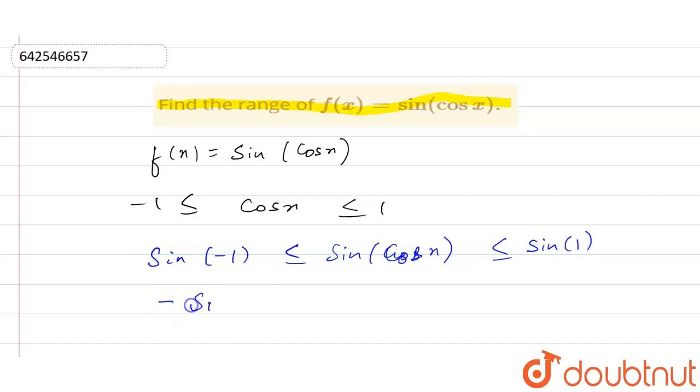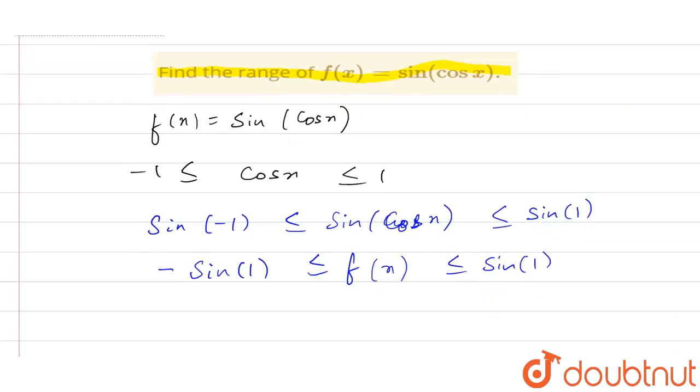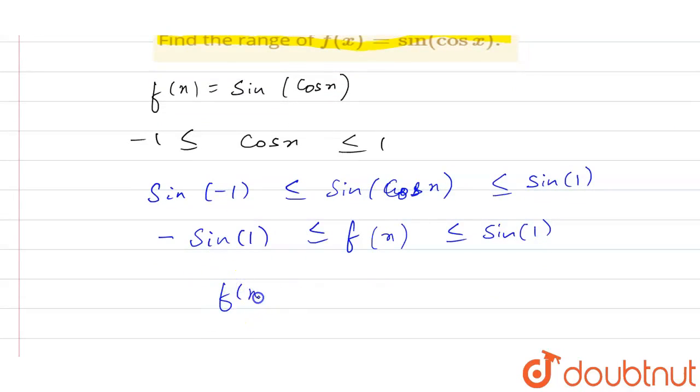So this will become minus sin of 1, and this is our function. Function f(x) is greater than or equal to minus sin of 1, but less than or equal to sin of 1. So the range of function f(x) belongs to minus sin of 1 to sin of 1.